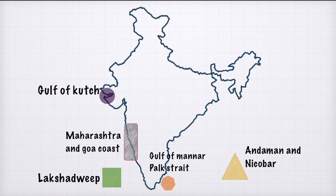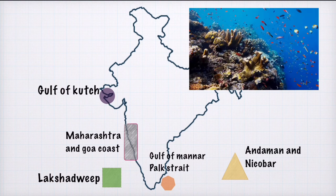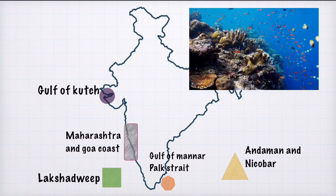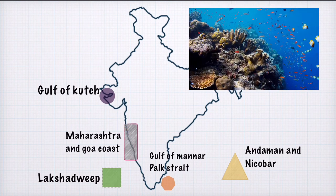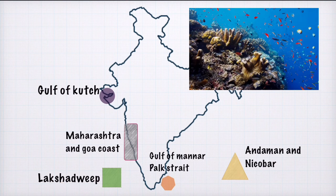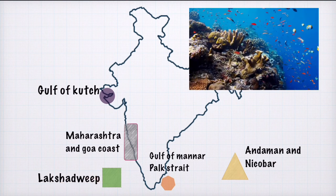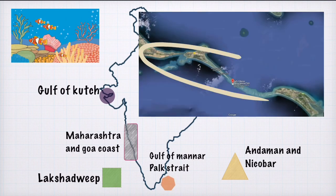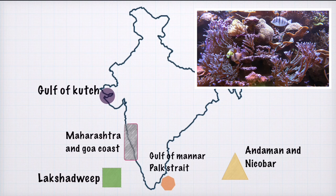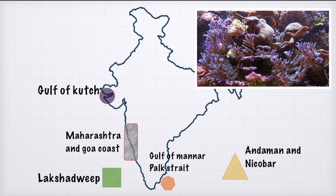Now we will discuss which regions of India have corals. The first region is the Gulf of Kachchh (Kach ki khadi). Next is the Maharashtra and Goa coast — not as much, but some coral reef can be seen there. Lakshadweep is super important because Lakshadweep is entirely coral islands. After that, the Gulf of Mannar, or Palk Strait, and islands like Dhanushkodi — corals can be found around them. And lastly, Andaman and Nicobar Islands, because these islands fall completely in the tropical zone, so corals can live here too.